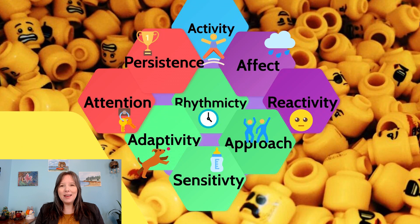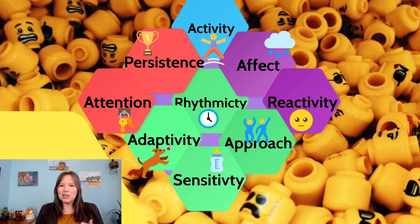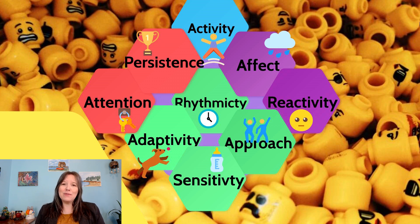So what are these nine traits? They are activity, persistence, attention, affect, reactivity, rhythmicity, adaptivity, approach, and sensitivity. We're going to go through all nine traits, and we'll see there's quite a bit of overlap. I've color-coded them so that dimensions that are somewhat related are represented in similar colors.